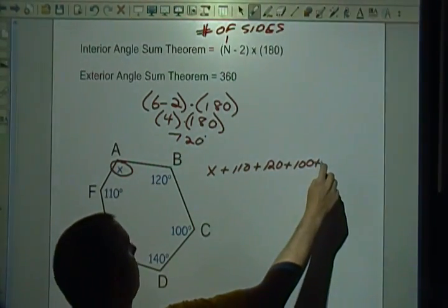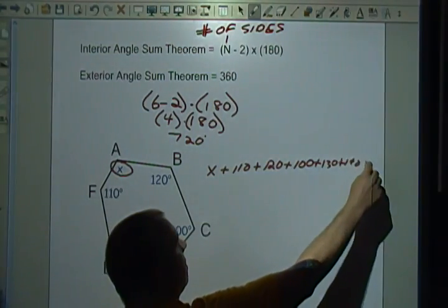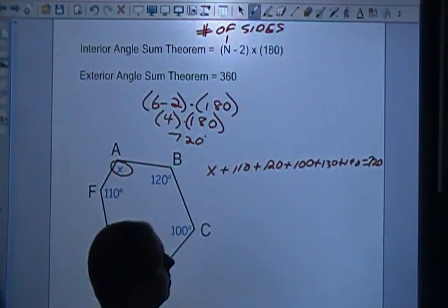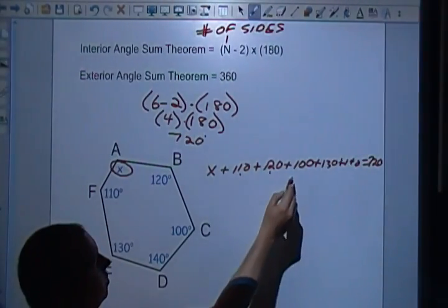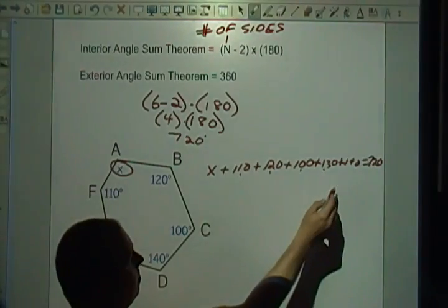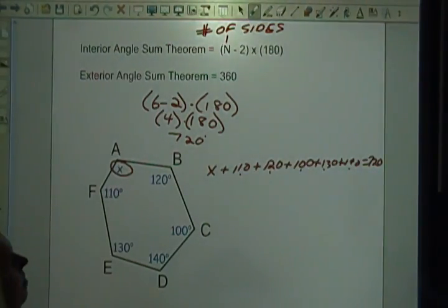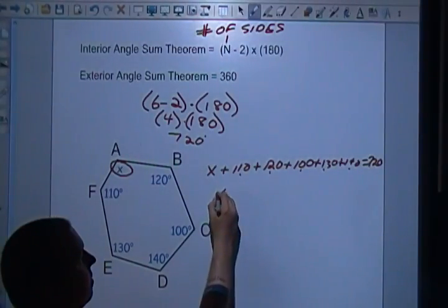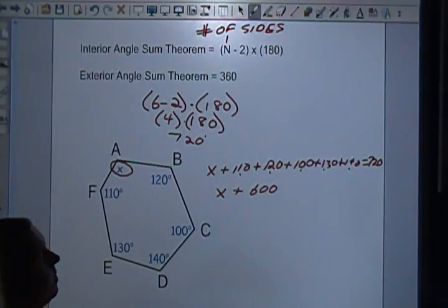Now I can combine like terms: 110 plus 120 plus 100 plus 130 plus 140. Okay, if I'm doing that right, that I believe is 600. So x plus 600 equals 720.